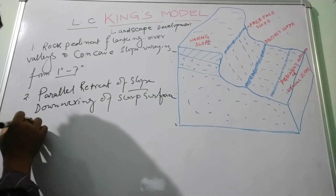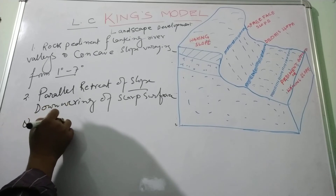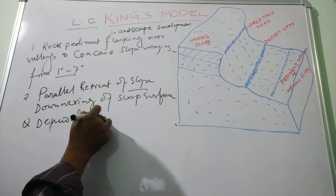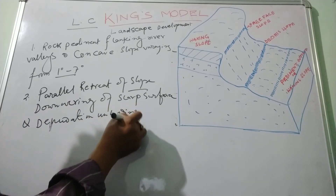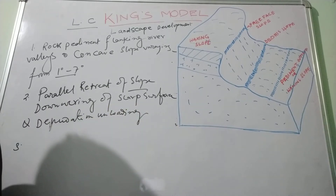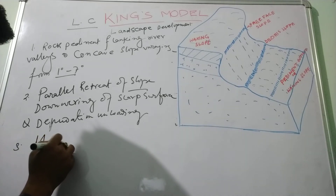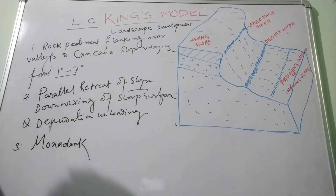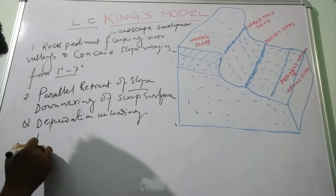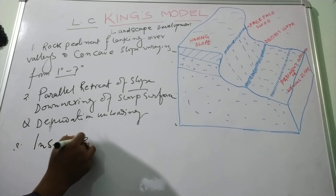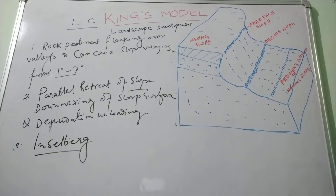The third element is the steep-sided residual hills, known as monadnocks by Davis, while King suggested these are inselbergs, whose size and shape depend on the magnitude of erosion.